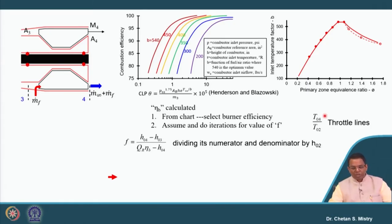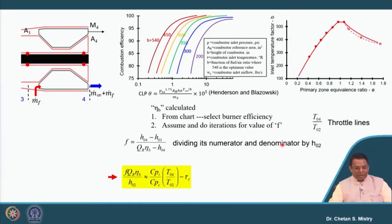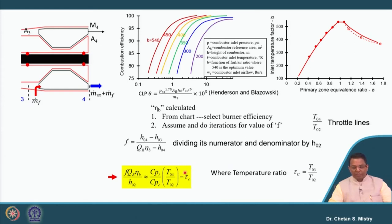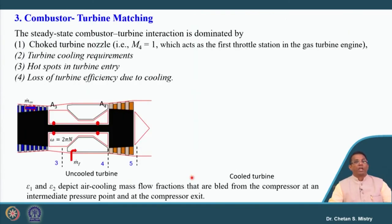Dividing the energy equation by h02, the equation is expressed in terms of T04/T02 and the temperature ratio T03/T02. From this equation we are able to calculate the burner efficiency and the stagnation enthalpy or temperature at the entry of the combustor.